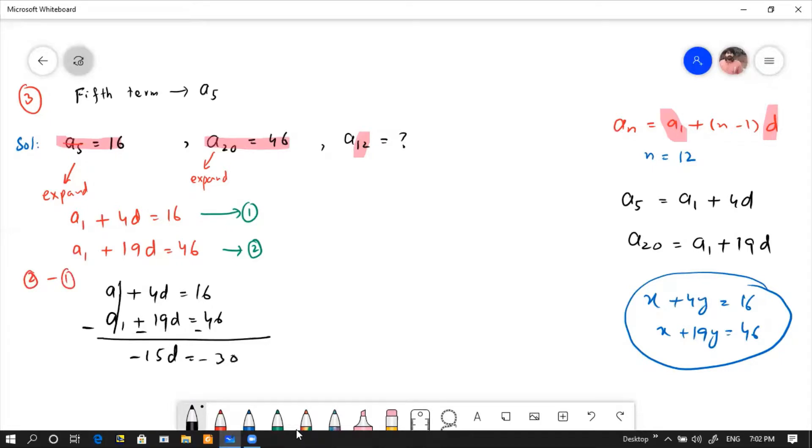Now what would you have to do with d value? Because minus sign cancels. 15d is equal to 30, so d value is 2. When one value comes, how did the other value come? We will put it in the first equation. Absolutely. Let's put d is equal to 2 in equation first. So A1 plus 4 times 2 is equal to 16. Now you have A1 is equal to 8.